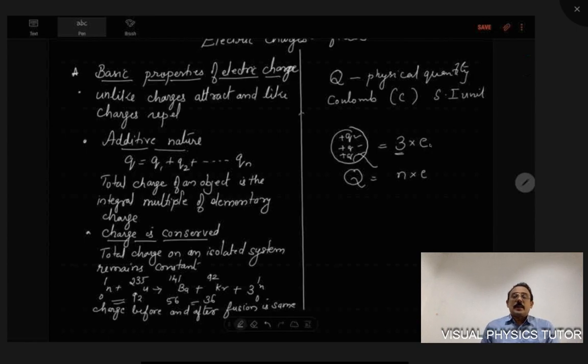Now before we wind up this session, I would like to put forward a question: What shall be the number of electrons constituted by one coulomb of charge? I repeat the question: What shall be the number of electrons constituted by one coulomb of charge?